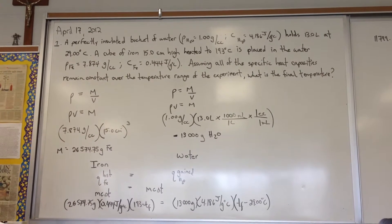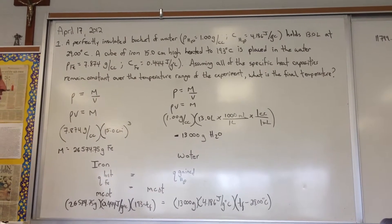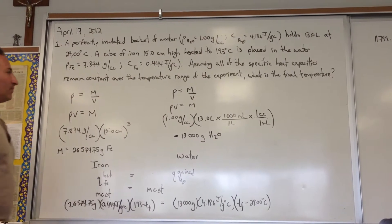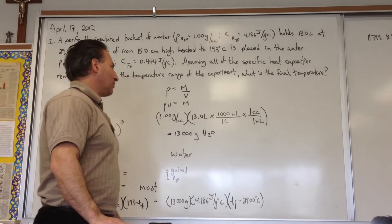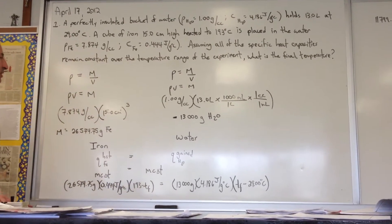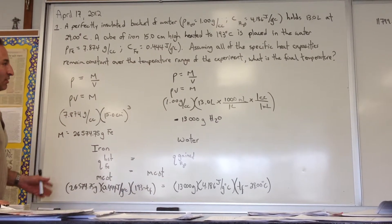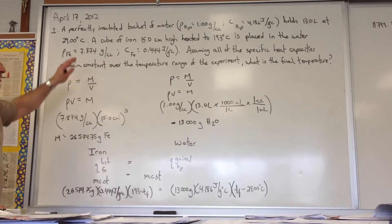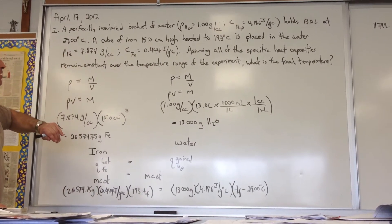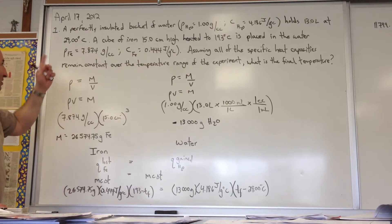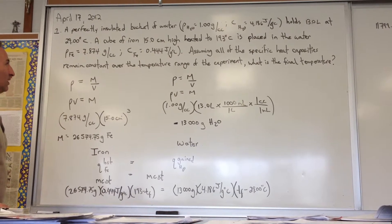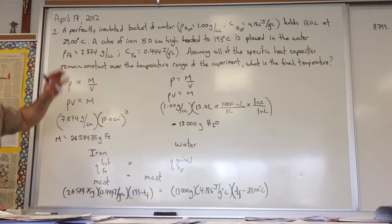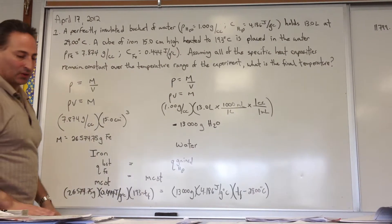Assuming all of the specific heat capacities remain constant over the temperature range of the experiment, what is the final temperature? We have to recall the first law of thermodynamics, which states that heat energy is neither created nor destroyed. Any heat lost by the hotter object is going to be absorbed by the colder object.